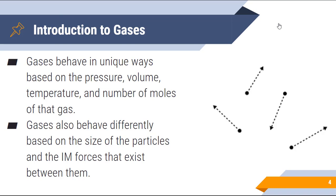Gases also behave differently based on the size of the particles and the intermolecular forces that exist between them. We've talked a lot about hydrogen bonding, London dispersion forces, dipole-dipole, and the size of the individual atoms themselves. Unfortunately, we're going to be talking about ideal gases today, and so since we're focusing on ideal gases, we will not be actually focusing on the last two variables that exist there.